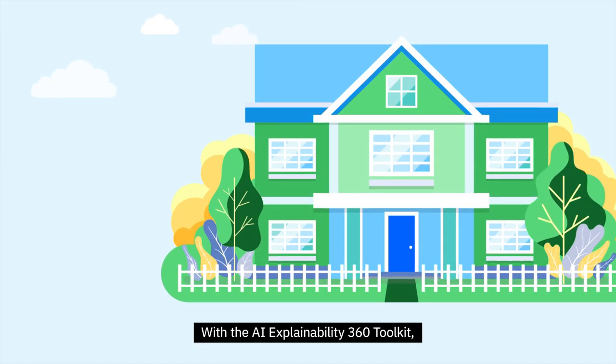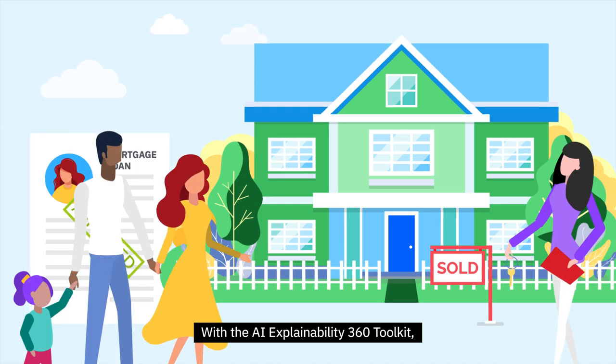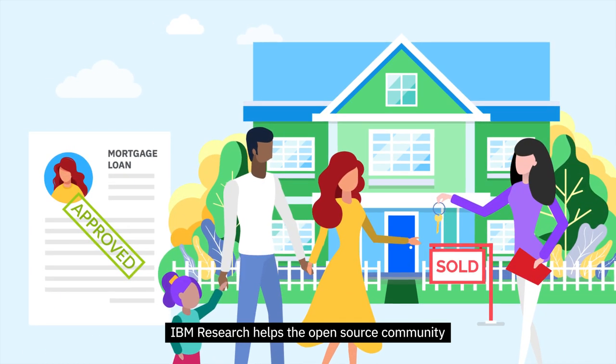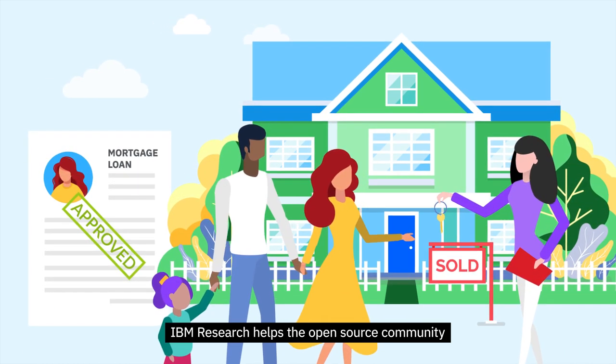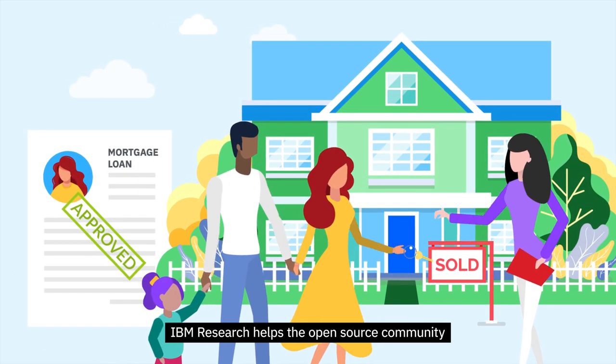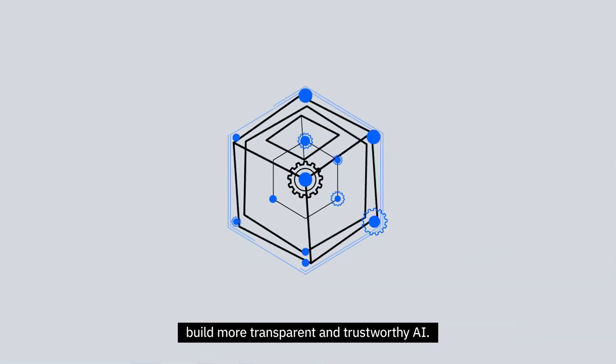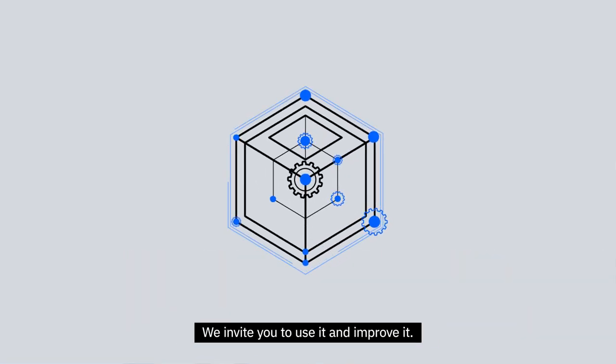With the AI Explainability 360 Toolkit, IBM Research helps the open-source community build more transparent and trustworthy AI. We invite you to use it and improve it.